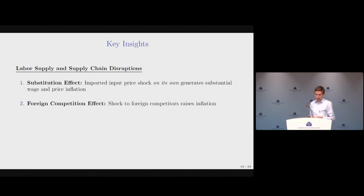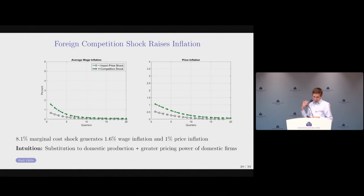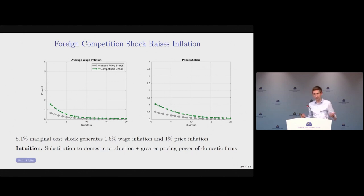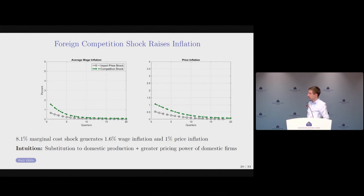The second lesson is that a shock to foreign competitors also raises inflation in the U.S. Feeding in just this marginal cost shock to foreign competitors generates about 1 percent price inflation. When foreign competitors are hit with a shock, consumers switch towards domestic producers, causing these firms to demand more domestic inputs and drive up wages. In addition, domestic firms gain greater pricing power and can increase their markups, since their foreign competitors have raised prices.